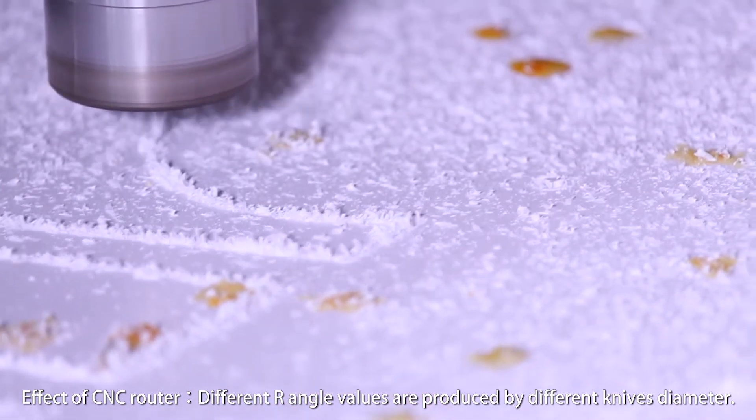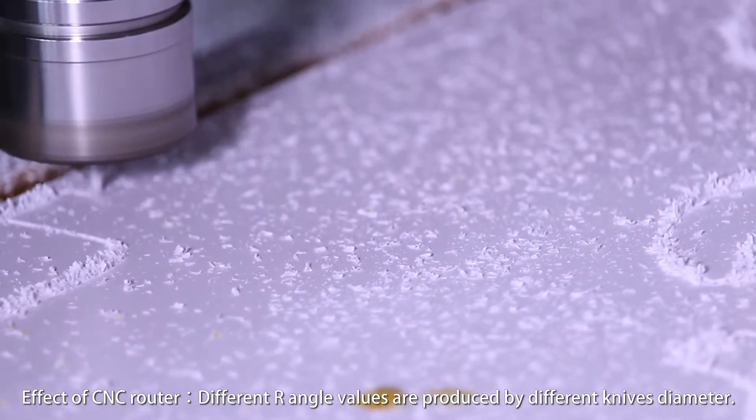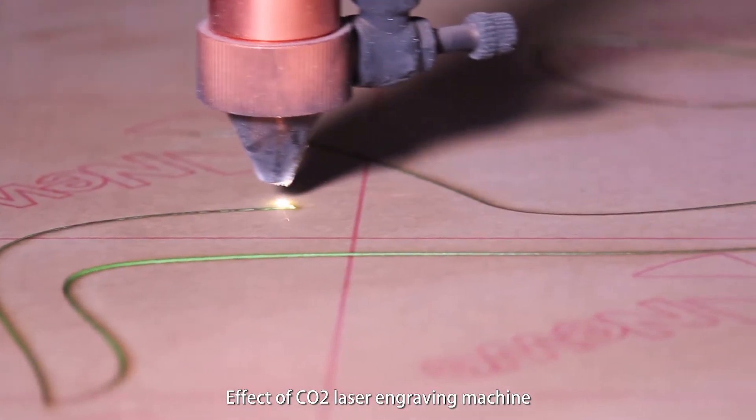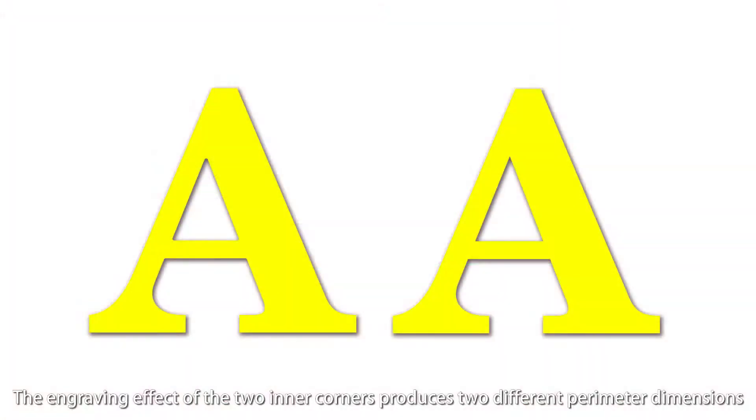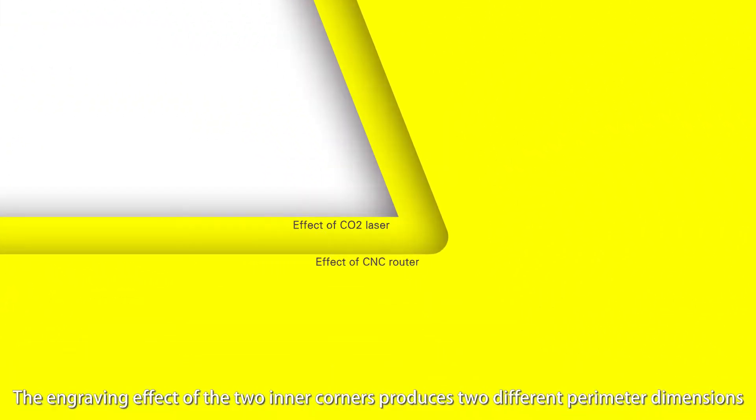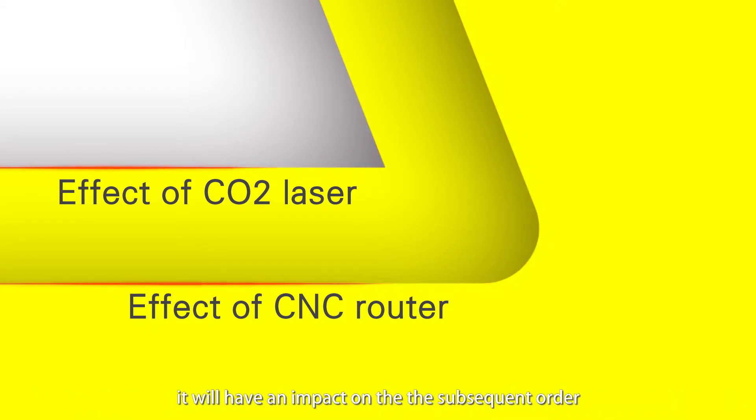Effect of CNC router: different R angle values are produced by different light diameters. Effect of CO2 laser engraving machine: the engraving effects of the two inner corners produce two different perimeter dimensions. It will have an impact on the subsequent order.